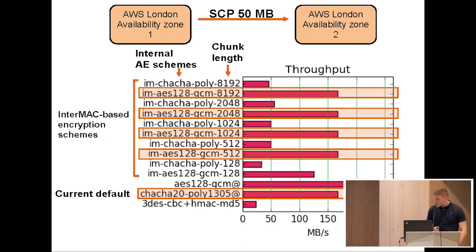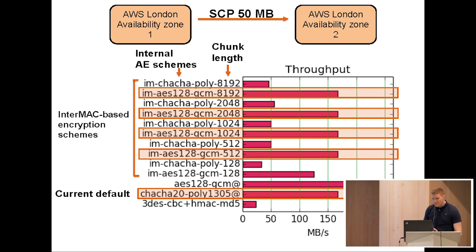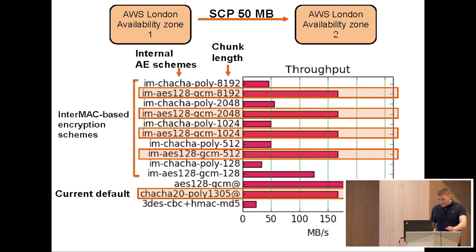We did two studies to see how well InterMAC performed in SSH. In the first study, we transferred 50 megabytes using SCP between two EC2 instances in two different availability zones on AWS. SCP is an SSH-based transfer protocol. The distance between availability zones is really short and the network is extremely fast.